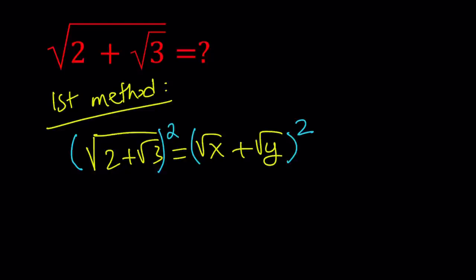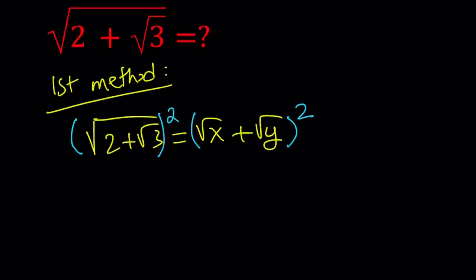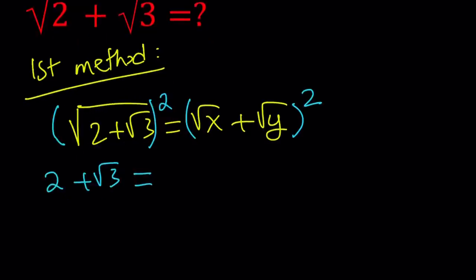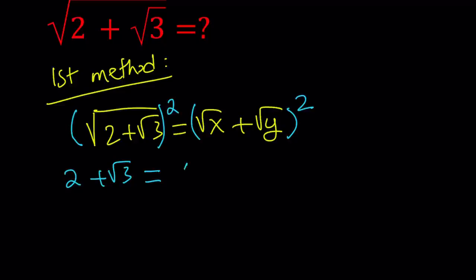Obviously, we want x and y to be rational numbers here. So when we square both sides, we're going to get 2 plus root 3 equals. On the right-hand side, I'd like to write the first and last terms together. So I'm going to write it as x plus y plus 2 times the square root of xy.